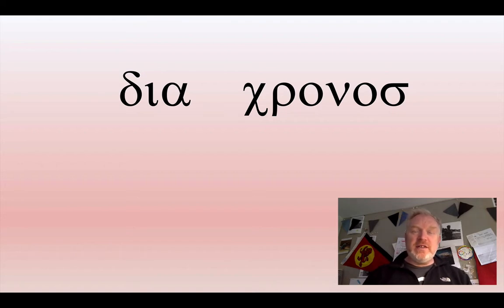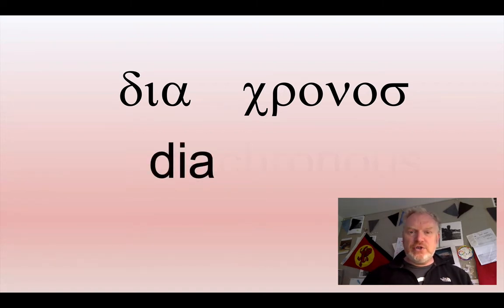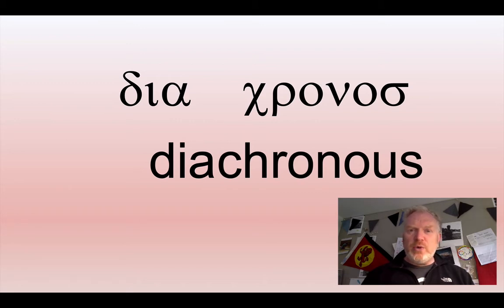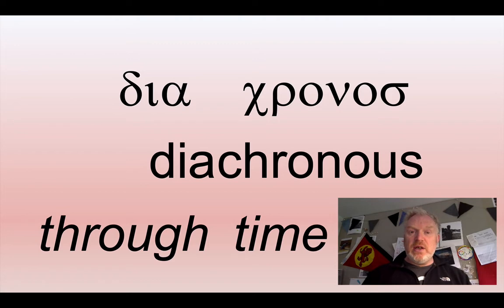What better way than to introduce a new idea in Geology with a little bit of Greek? These words, 'dia' and 'chronos', are words we use for a new idea in Geology. The word we use is diachronous. If we translate from the Greek, what that actually means is 'through time'. We need to look at beds that get deposited at different points in geological time — the same bed which has different ages.